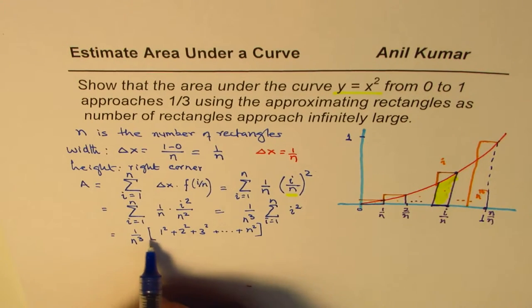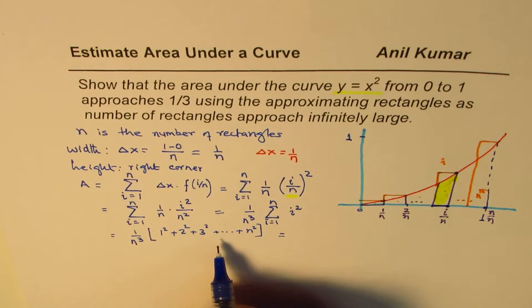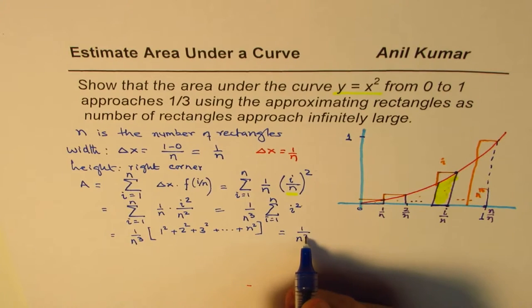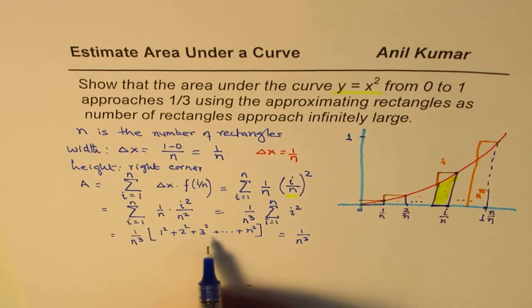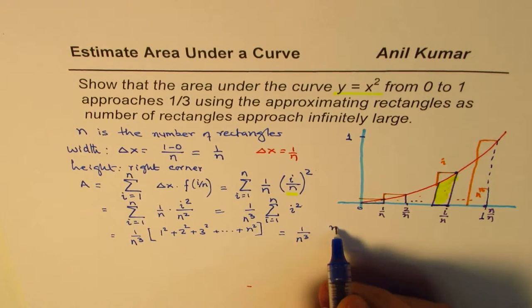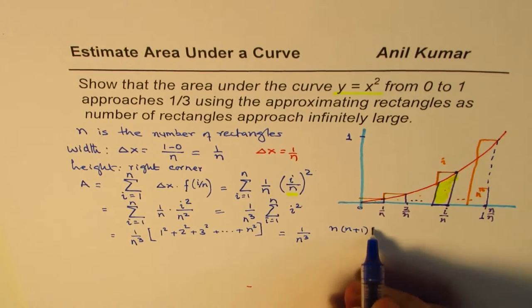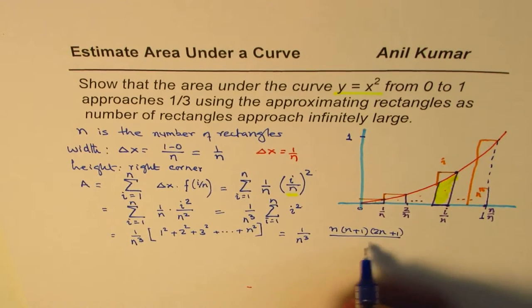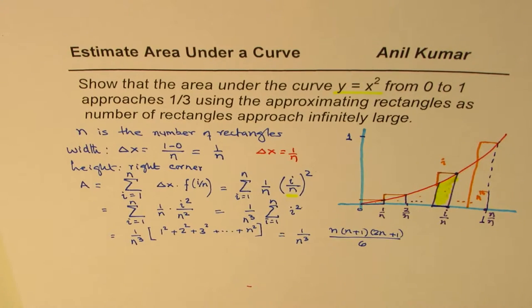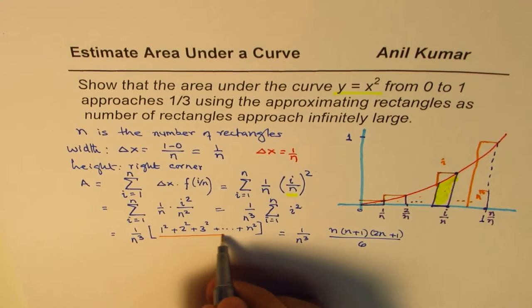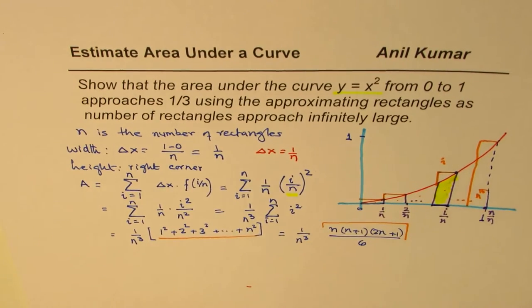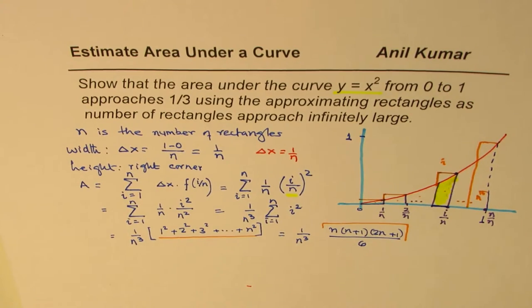Now I hope you remember the formula for this series of sum of squares. So we have done it in other videos. Let me just take this formula which is a standard formula for sum of squares. We are not really deriving it here. We'll just substitute the formula. Formula is n times n plus 1 times 2n plus 1 divided by 6. That is the formula for this term. So what we have done here is we have replaced the series with that formula. So this is a very standard formula.